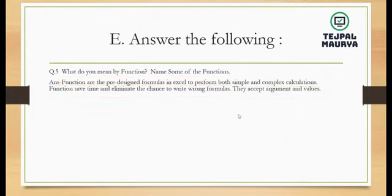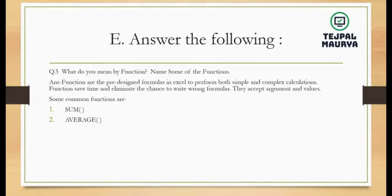That is the definition of a function. Now let's name some functions. Some functions in Excel are: SUM, AVERAGE, MAX, MIN, and COUNT. You can write these five functions as the answer. SUM, AVERAGE, MAX, MIN, and COUNT — this is enough for the answer. This is the answer to question number 5.